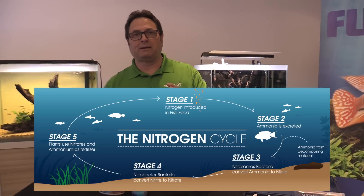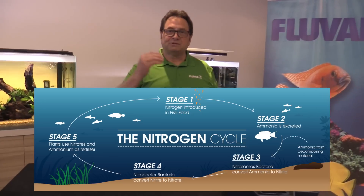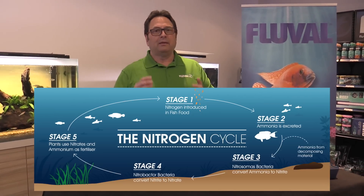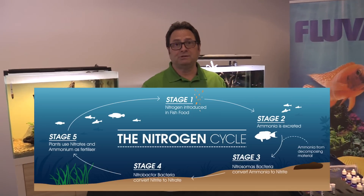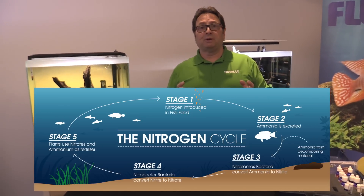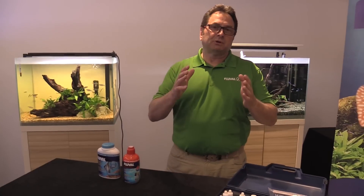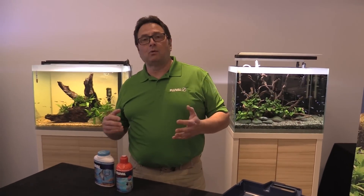Stage three kicks in: you've got Nitrosomonas bacteria — they convert ammonia to nitrite. Now we're into stage four: you've got the establishment of Nitrobacter bacteria, they convert nitrite to nitrate. And finally, stage five: as nitrate values go up, you now have a more or less harmless byproduct at the end called nitrate.